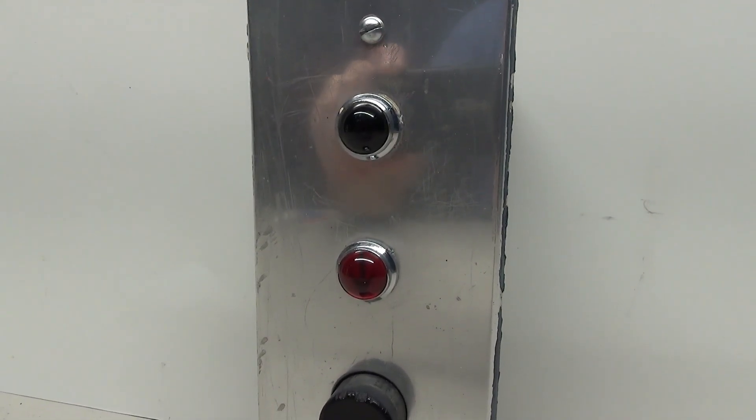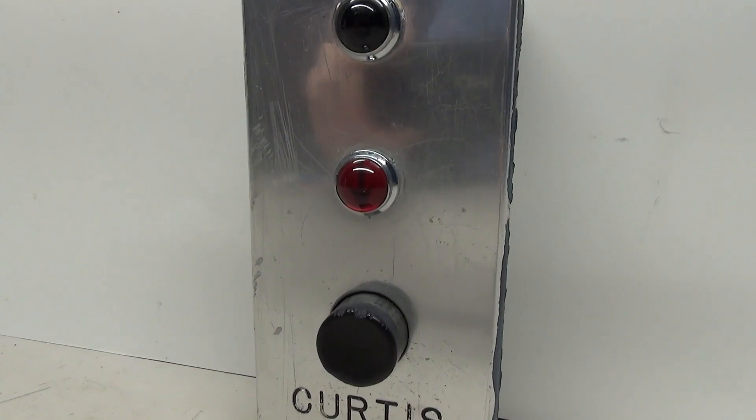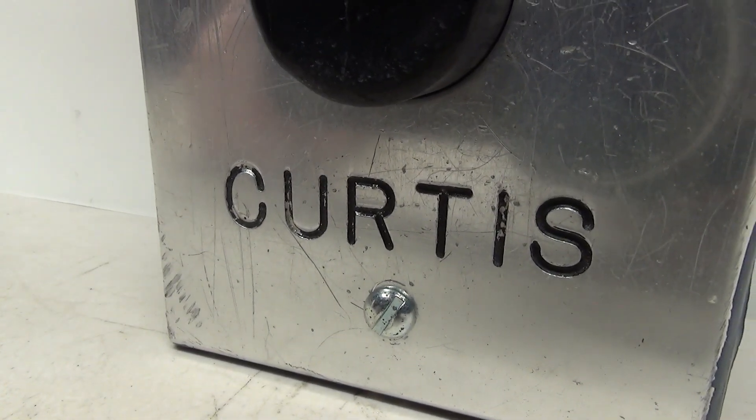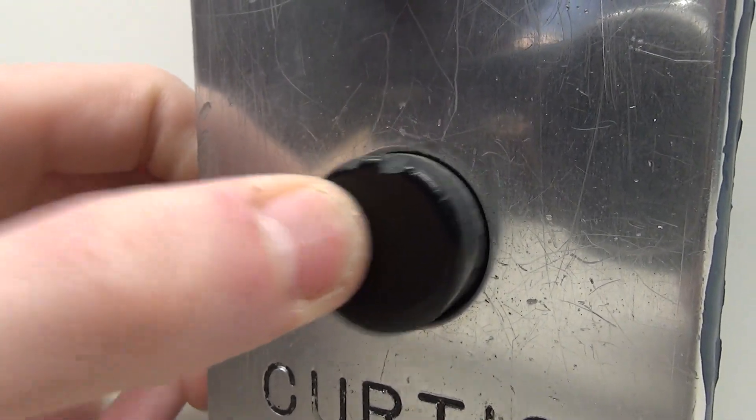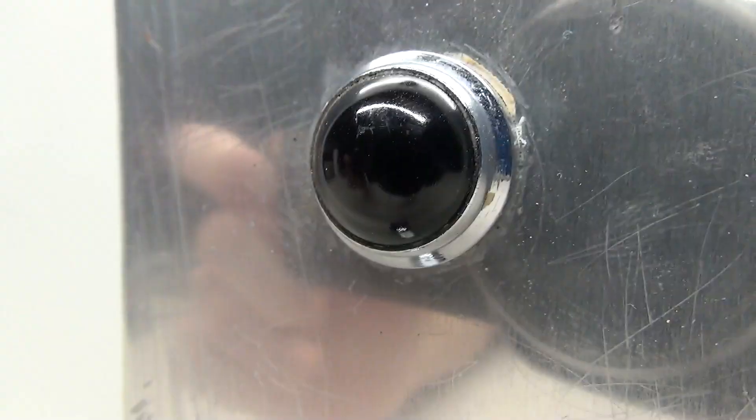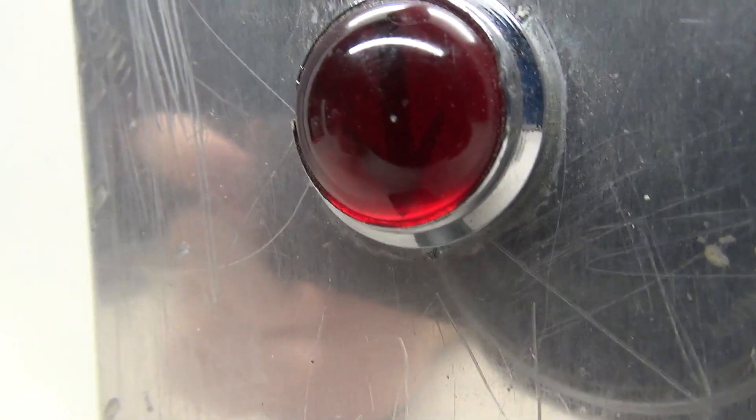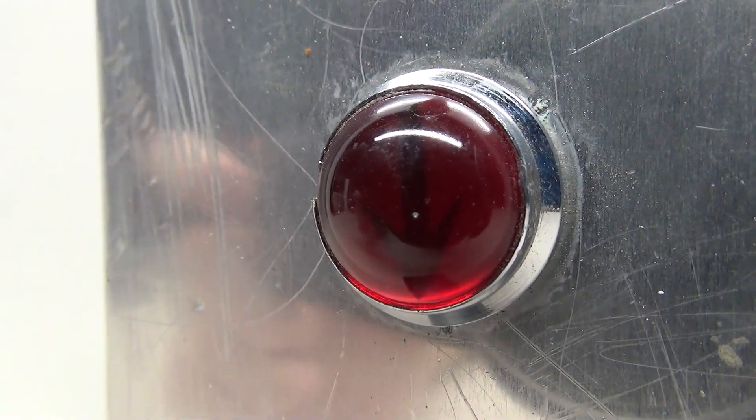Now before I get started with the wiring let's take a closer look at the fixture. At the bottom is the Curtis text. Here's the button and it feels like a very large and durable button. Here's the down light and the up light, and if you look really closely there's actually an arrow in the light.